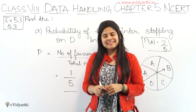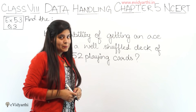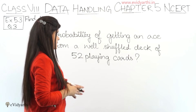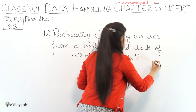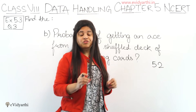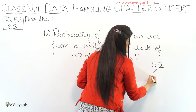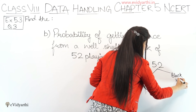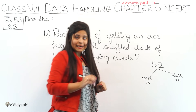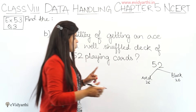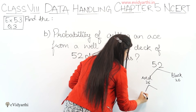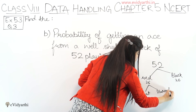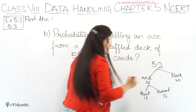So this was the A part. Now let's come to the B part. In B part, we have: probability of getting an ace from a well-shuffled deck of 52 playing cards. Now, as everyone knows, a full deck of playing cards has 52 cards. In these 52 cards, there are two parts: half are red and half are black — meaning 26 black cards and 26 red cards. In red cards, one type is heart and the other is diamond, which means 13 heart cards and 13 diamond cards.